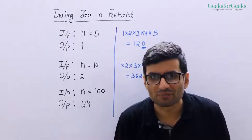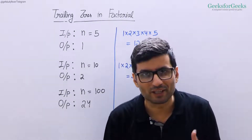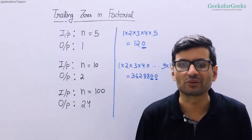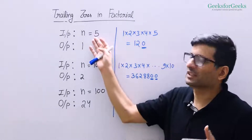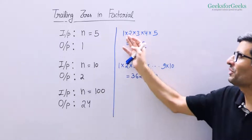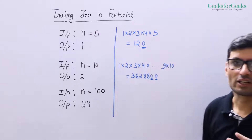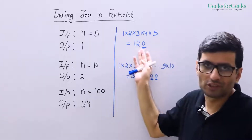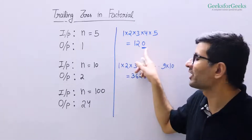Let us talk about this problem. We are given a number n and our task is to count trailing zeros in factorial of n. For example, if n is 5 then its factorial is 1 × 2 × 3 × 4 × 5. If we compute this value we get 120, and 120 has 1 trailing zero.